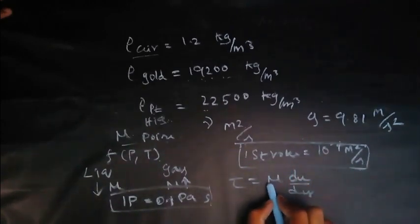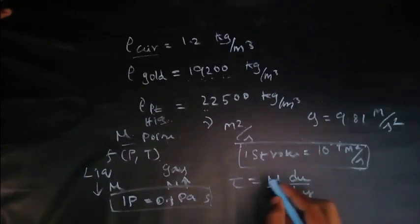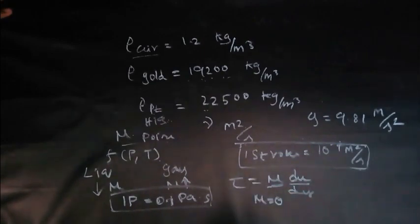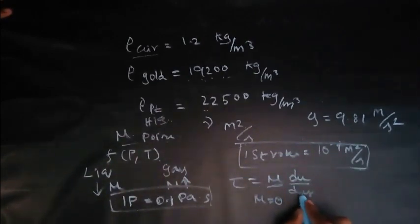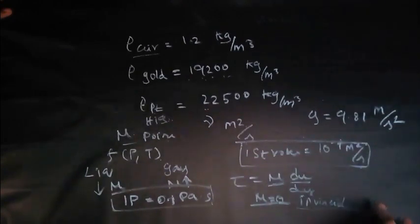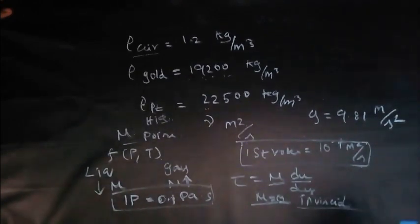So mu, there will be some viscosity in every fluid. If it is zero, then it is an ideal fluid. So it is also known as inviscid fluid. If mu is equal to zero, it is known as inviscid fluid. So that's all you have to know about that.